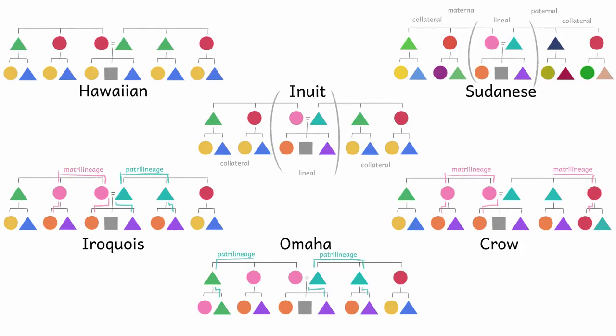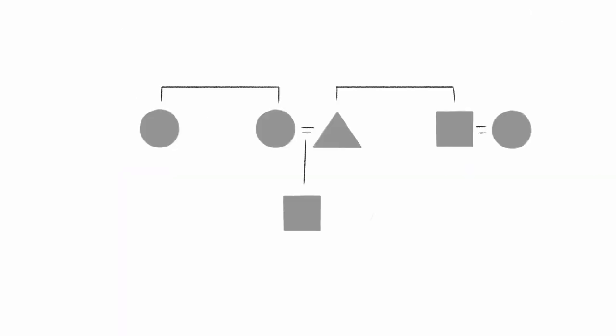So these are the basic things that kinship systems can distinguish between. There can also be added complexities. For example, in English, we would distinguish between blood relatives and relatives by marriage. But only for our lineal relatives. It would sound weird to distinguish between an aunt and an aunt-in-law.